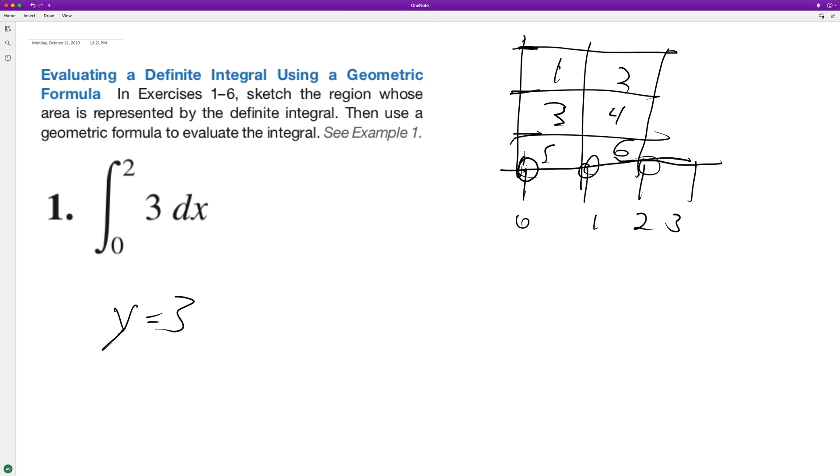So the integral, when we integrate this, we get 3. That's our constant. Put that in front of the integrals. We get 0 plus 1. And then put this over 0 plus 1. So we end up with 3x. And this is going from 0 to 2.